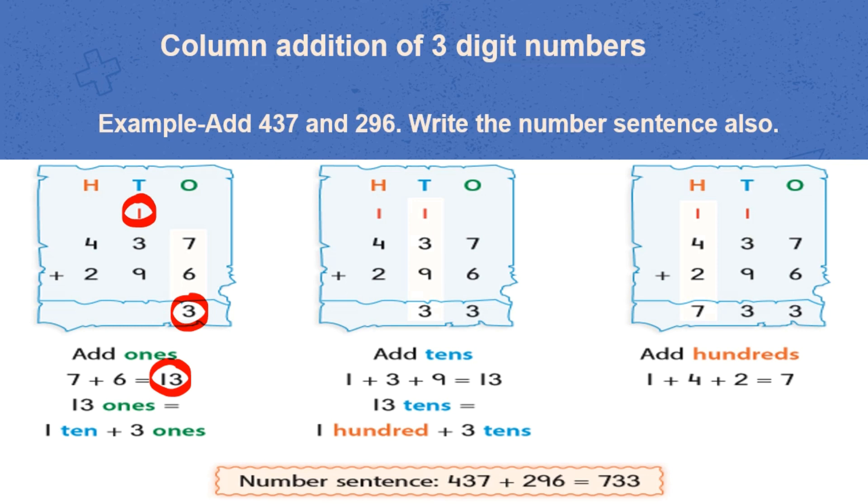Now, we will add digits 1, 3, 9 at 10's place, which will again give us 13. So, we will write 3 at 10's place. And 1 is sent as carry over at 100's place.